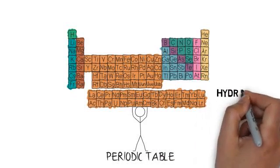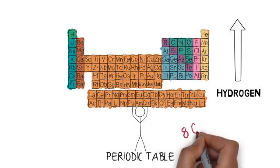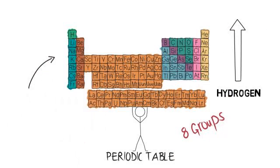There are eight groups in the periodic table starting with group 1 on the far left side going downwards, group 2 next to it also going downwards, and all the way up to group 8, which is also known as group 0.